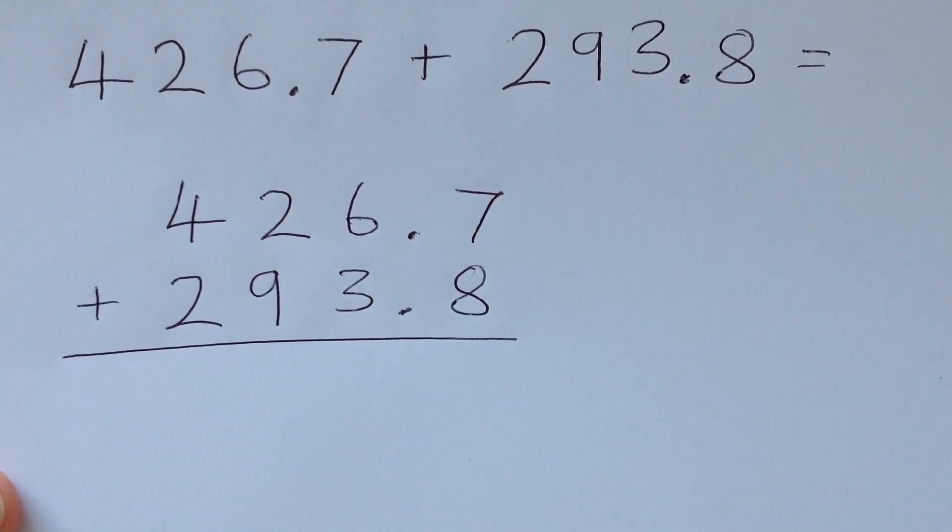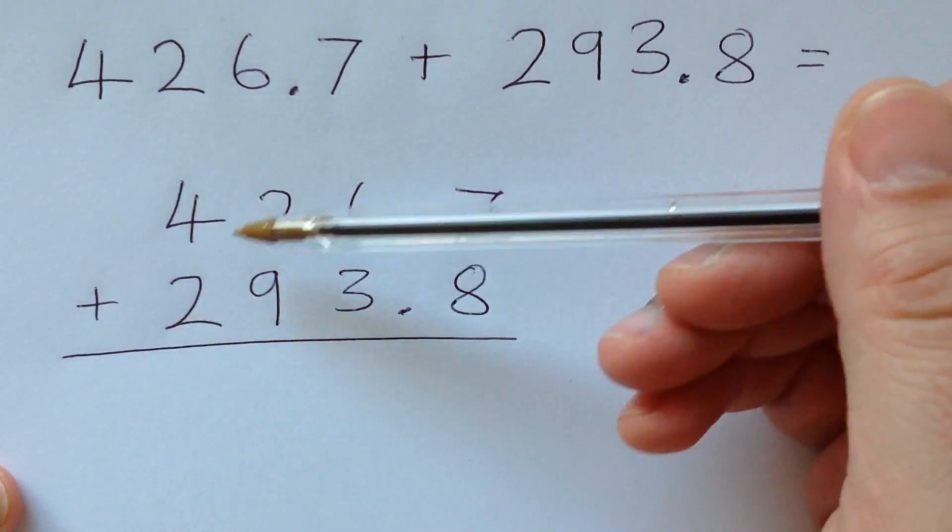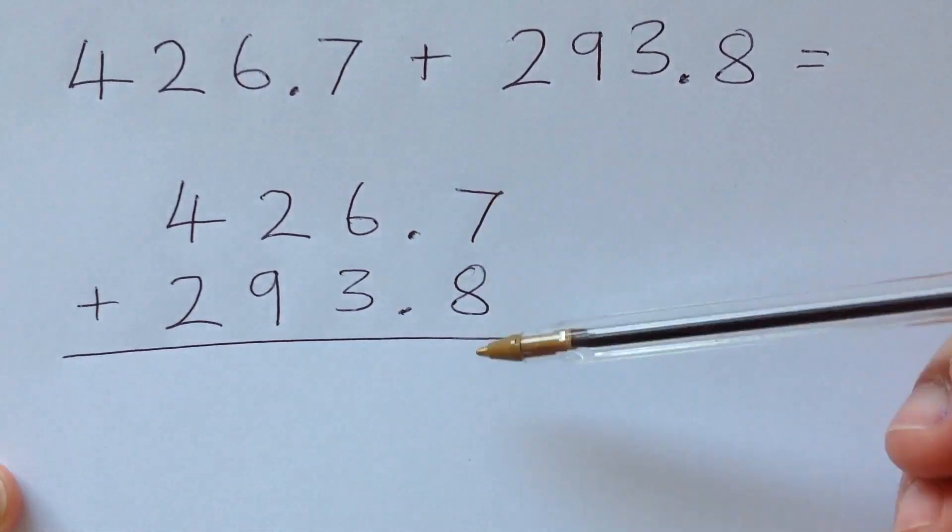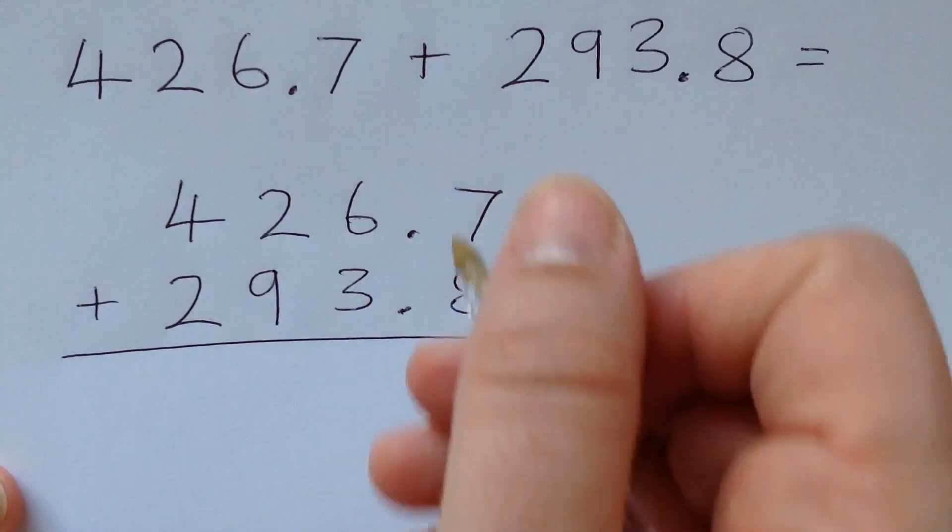You'll notice it actually looks identical to the previous problem because I've got my hundreds, my tens, my ones, and now my tenths, all crucially together in their columns.